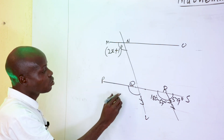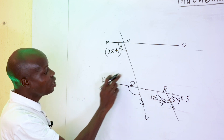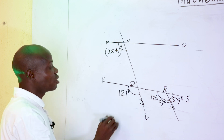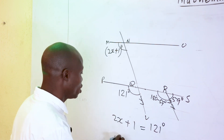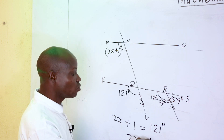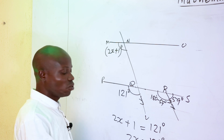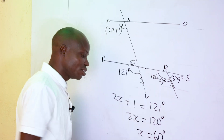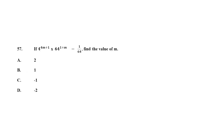Angle PQU and 2x plus 1 are corresponding angles, equal to 121 degrees. So 2x equals 120 degrees, giving x equals 60 degrees. The correct answer for question 56 is 60 degrees.